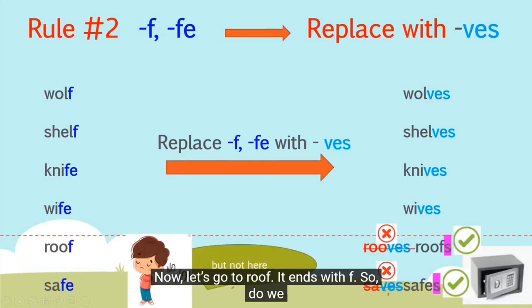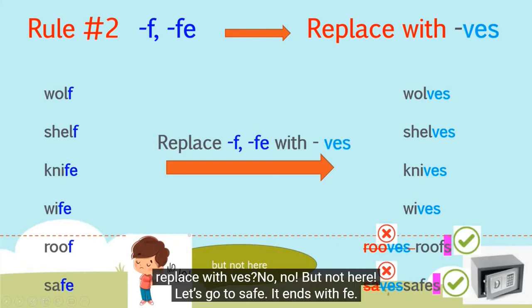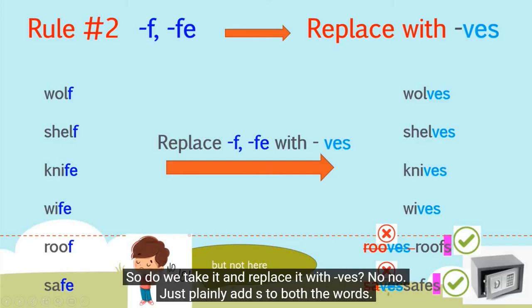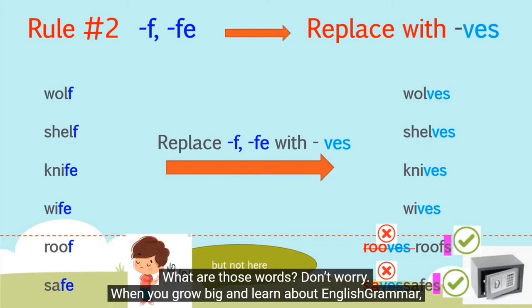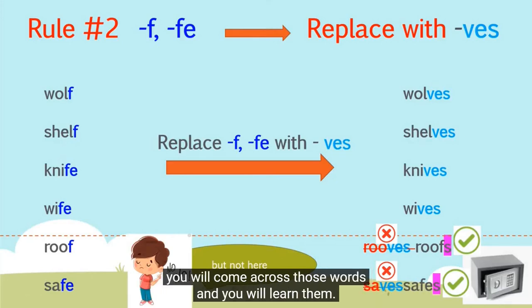Now let's look at roof — it ends with F. Do we replace it with VES? No. And scythe — it ends with FE. Do we replace it with VES? No. We just plainly add S to both words. Why? Because some words in grammar only add a plain S for their plural forms. Don't worry — when you grow big and learn about English grammar, you will come across those words and learn them.